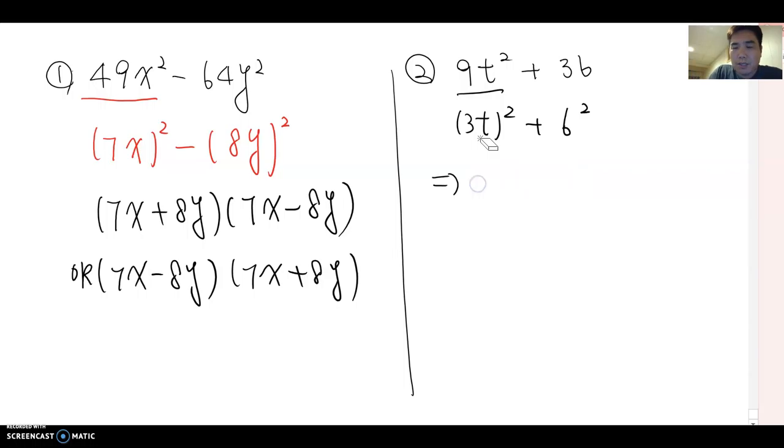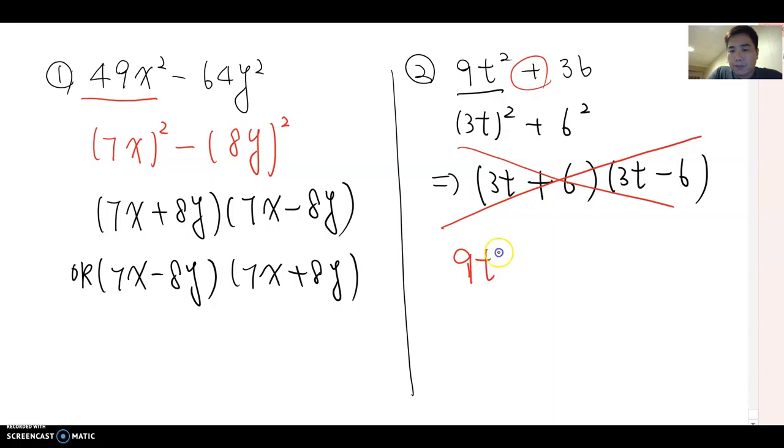What about number two? Let me know if you got (3t)² and 6², so the answer is (3t + 6)(3t - 6). If you got this answer, I have to say it's not right. In binomial factoring, especially with square terms, this sign must be minus. If it's positive, it's not factorable.